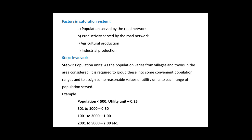For example, villages with population less than 500 will be grouped with a utility unit of 0.25. Villages with the population range of 501 to 1000 will be assigned a utility unit of 0.5. The range 1001 to 2000 gets utility unit 1, and 2001 to 5000 gets utility unit 2.